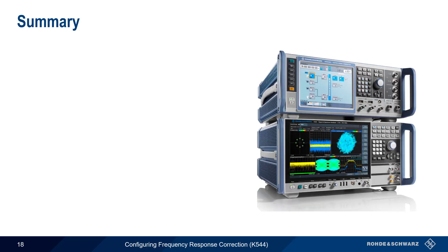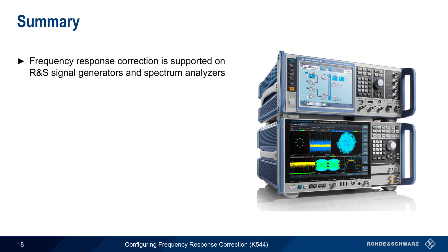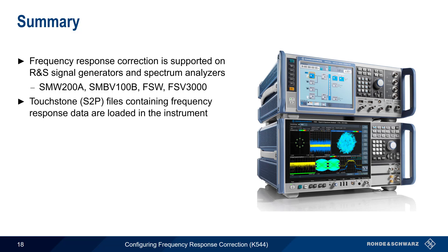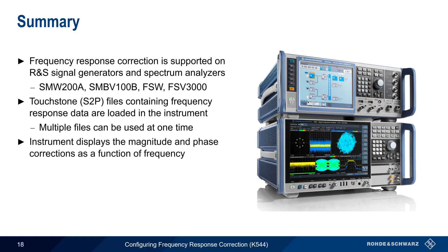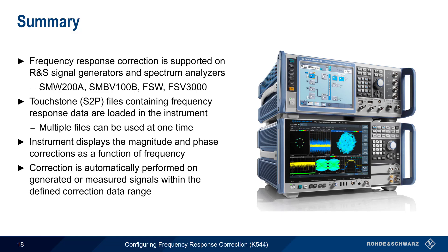Let's summarize what we've covered. Frequency response correction is supported on Rohde and Schwarz vector signal generators and spectrum analyzers — specifically the SMW200A, the SMBV100B, and the FSW and FSV3000 family of analyzers. S2P or touchstone files containing measured frequency response data are loaded into the instrument, and multiple files can be loaded or individually enabled and disabled for test setups containing multiple components. The magnitude and phase of each set of correction data can also be easily viewed within the graphical user interface. After the frequency response data has been loaded and applied, correction is performed automatically on all signals within the frequency range of the supplied correction data, without any additional user intervention or configuration.